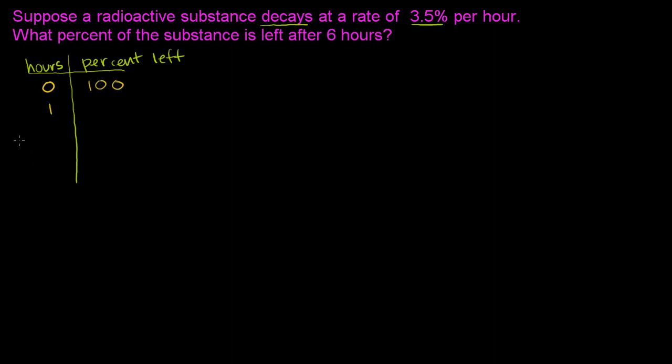After one hour, what's happened? Well, it decays at a rate of 3.5% per hour. So 3.5% is gone. Or another way to think about it is 0.965. Right, or remember, if you take 1 minus 3.5%, or if you take 100% minus 3.5%, this is how much we're losing every hour. That equals 96.5%.